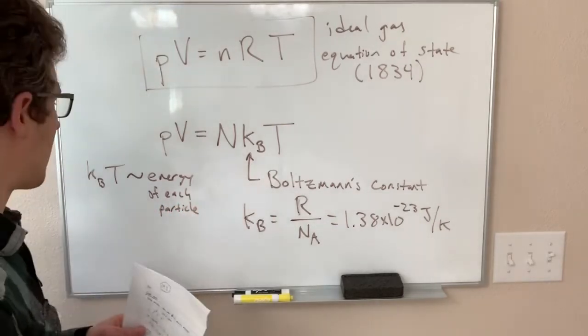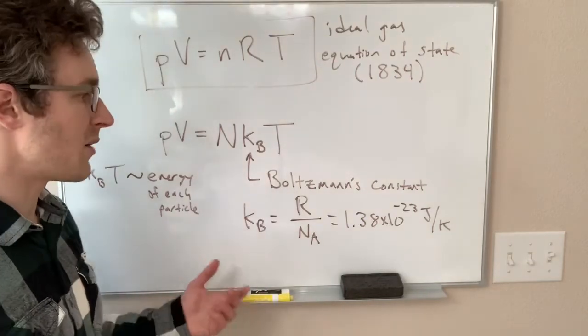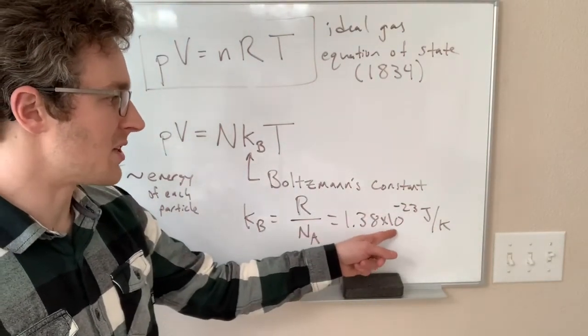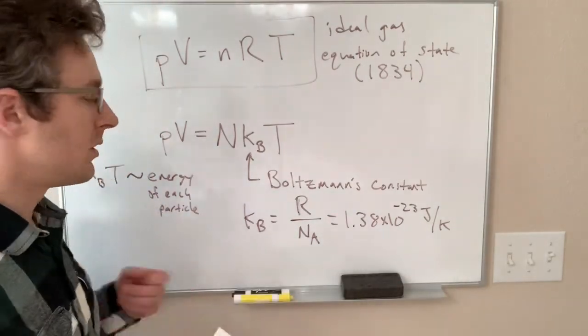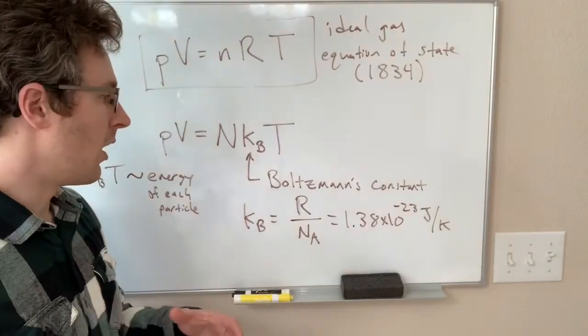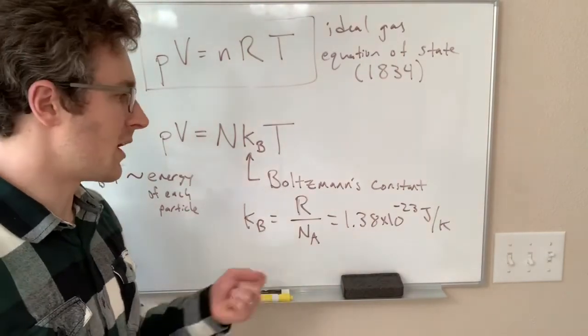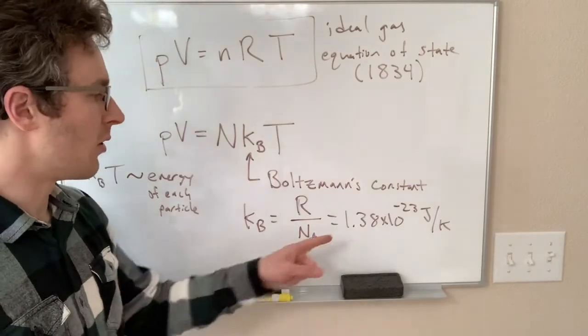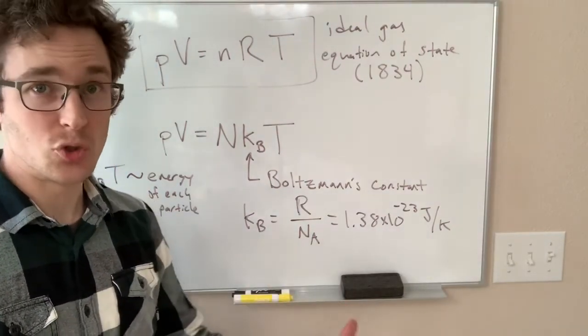So, if we are at a thousand Kelvin, a thousand times this is 1.38 times 10 to the minus 20 joules, and our Kelvins cancel. Each particle in our system of gas, of solid, or whatever, at a thousand Kelvin is going to have its individual kinetic energy roughly equal to, or kinetic or potential, or its total energy roughly equal to 1.38 times 10 to the minus 20 joules.